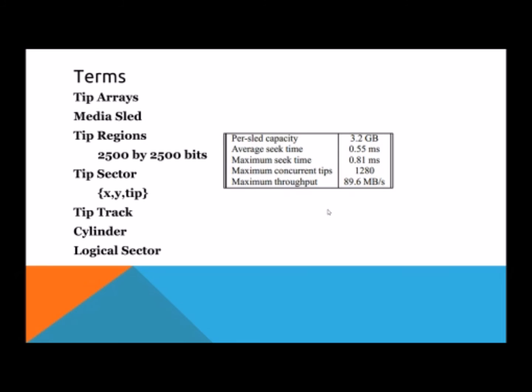The tip region is the area that a tip array is able to read. Each of the tip arrays only has access to a certain amount of bits. It's usually 2,500 by 2,500 bits. So if there's 200 tip arrays, it will be 2,500 by 2,500 times 200 and that would be how many bits that that media sled can hold. The whole thing is accessed using tip sectors, which is defined as a coordinate system with an X and Y grid. And the third coordinate is the tip, and that refers to what tip number it has. So each tip array has its own X and Y coordinate system.